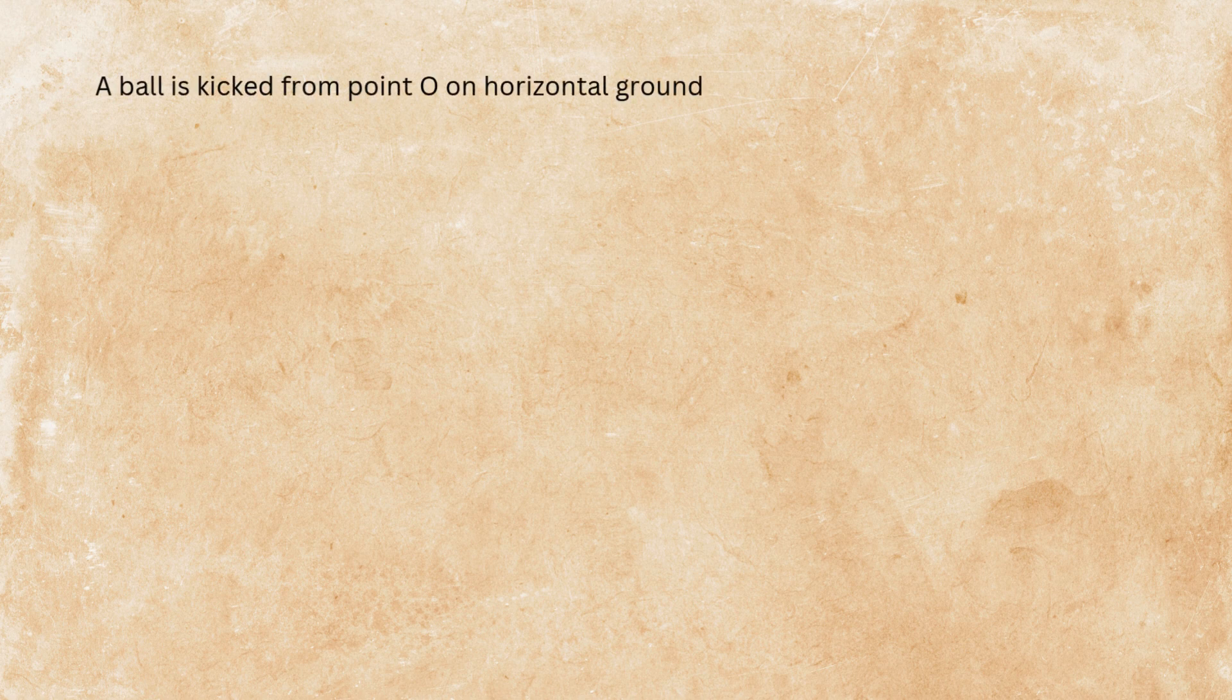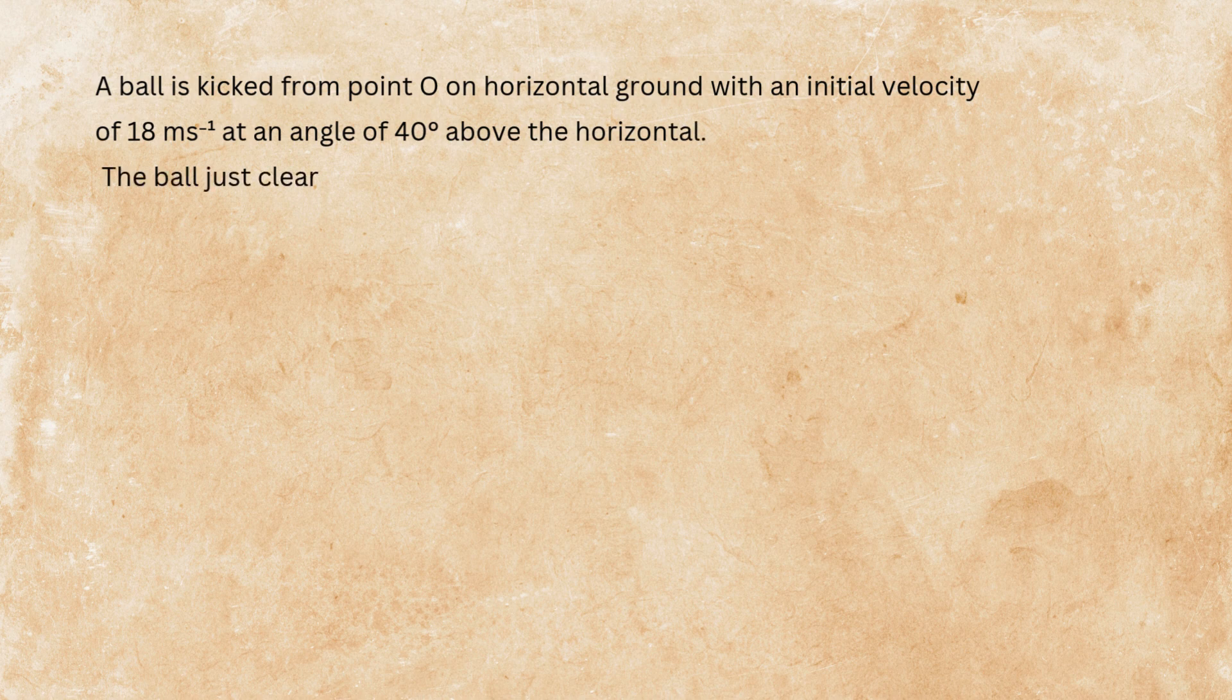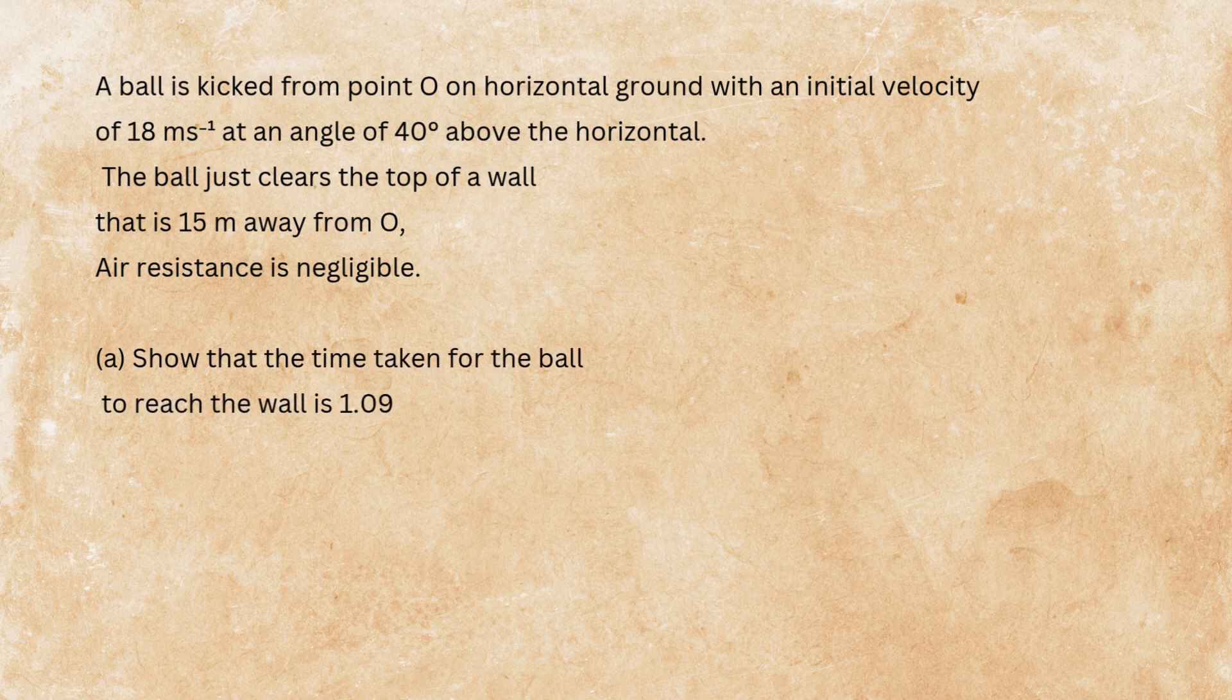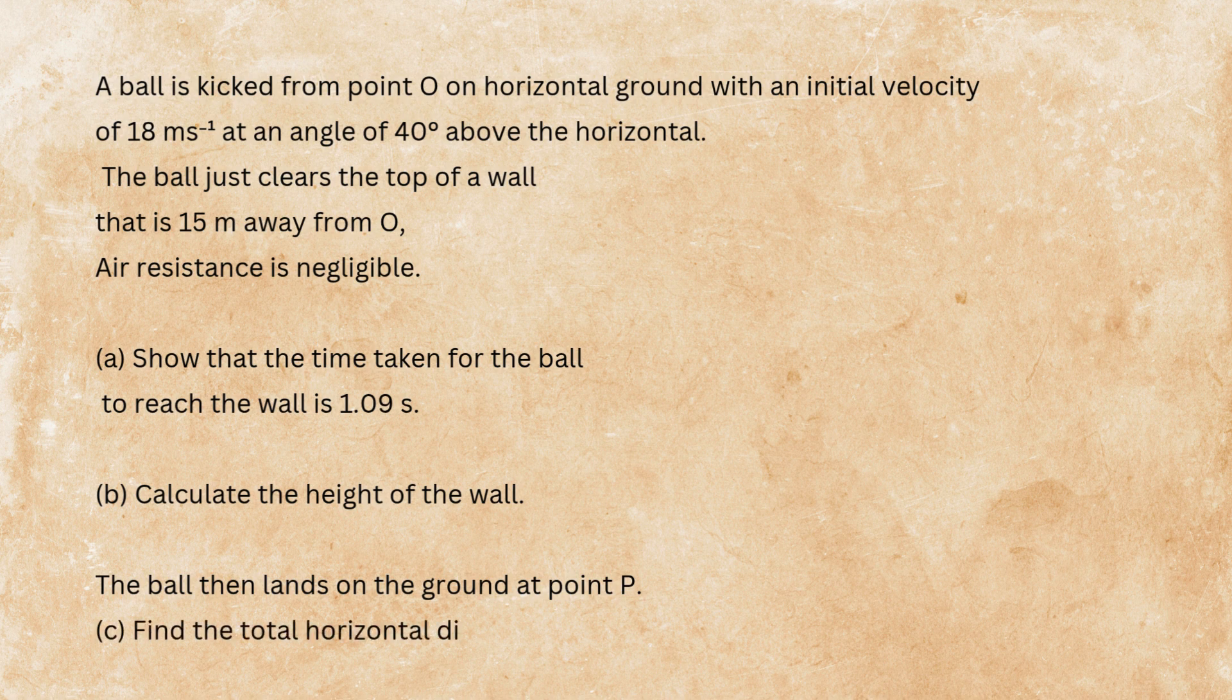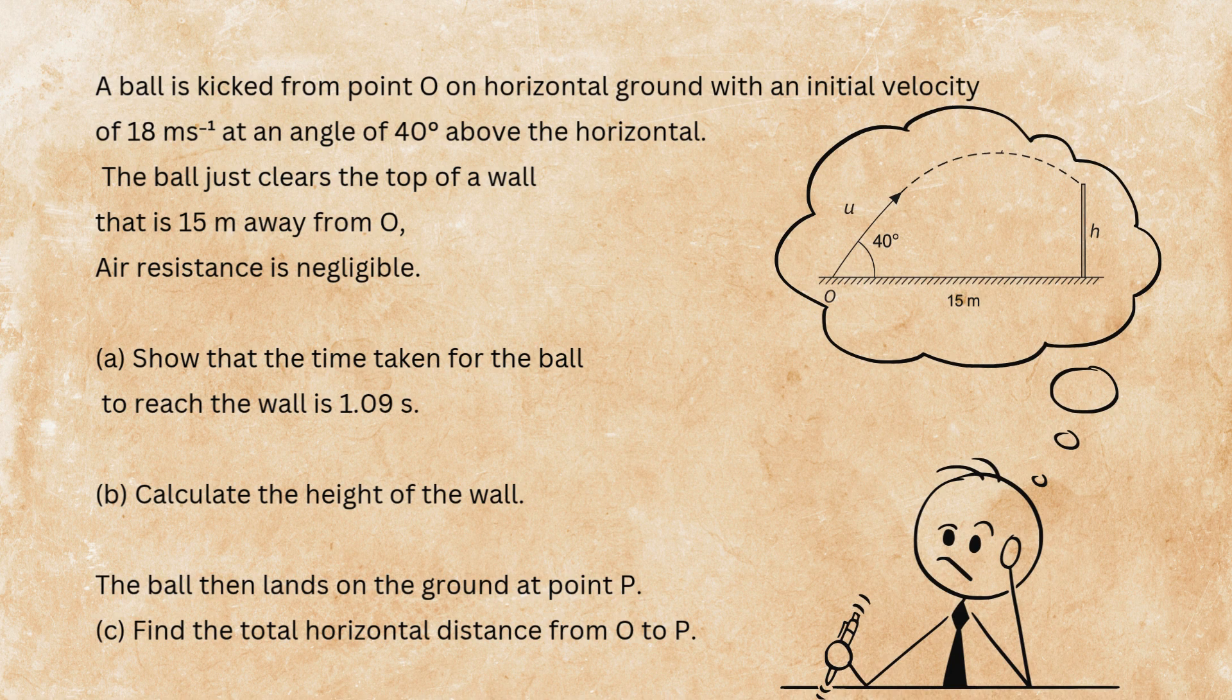Here we have a projectile question that looks scary at first. It's a long question, but step by step we are going to solve it to see how easy it can be done. A ball is kicked from point O on horizontal ground with an initial velocity of 18 meters per second, at an angle of 40 degrees above horizontal. The ball just clears the top of a wall 15 meters away from O.